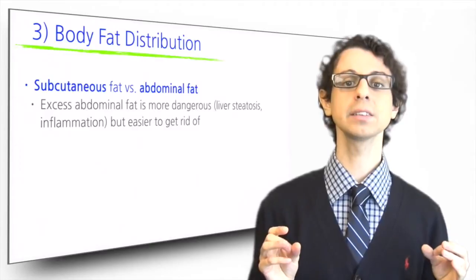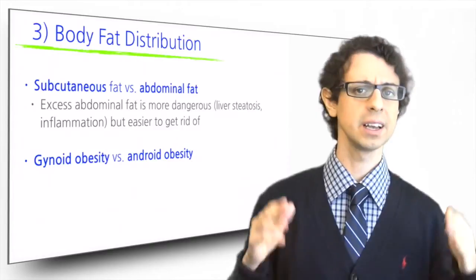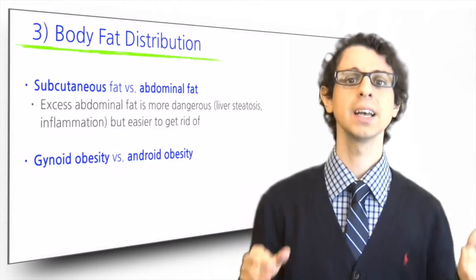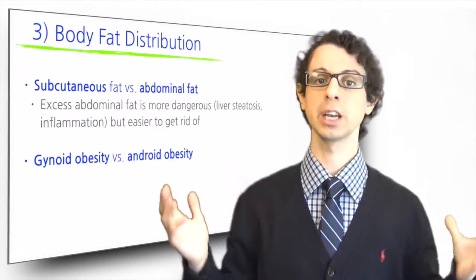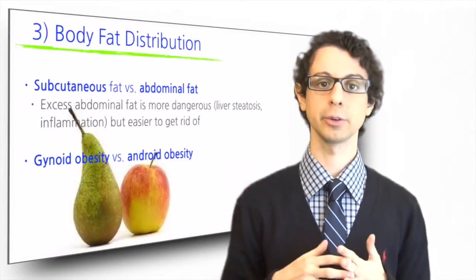Accumulation of excess fat in the abdominal region is called android obesity, central obesity, visceral fat, abdominal fat, sometimes referred to as apple-shaped obesity, and it is more frequent in men or women after menopause.